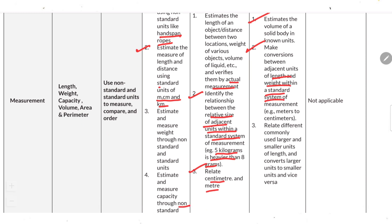Estimate the volume of a solid body in known units. Make conversions between adjacent units of length and weight within a standard system, such as meters to centimeters. Relate different commonly used larger and smaller units of length, and convert larger units into smaller and vice versa.